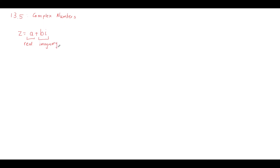I'm using the word component deliberately here because I want you to think back to vectors — that's in the same unit. All of this stuff kind of relates to each other. You can think of complex numbers like a vector. It has two components: a real component and an imaginary component. And because of this, we can graph it.